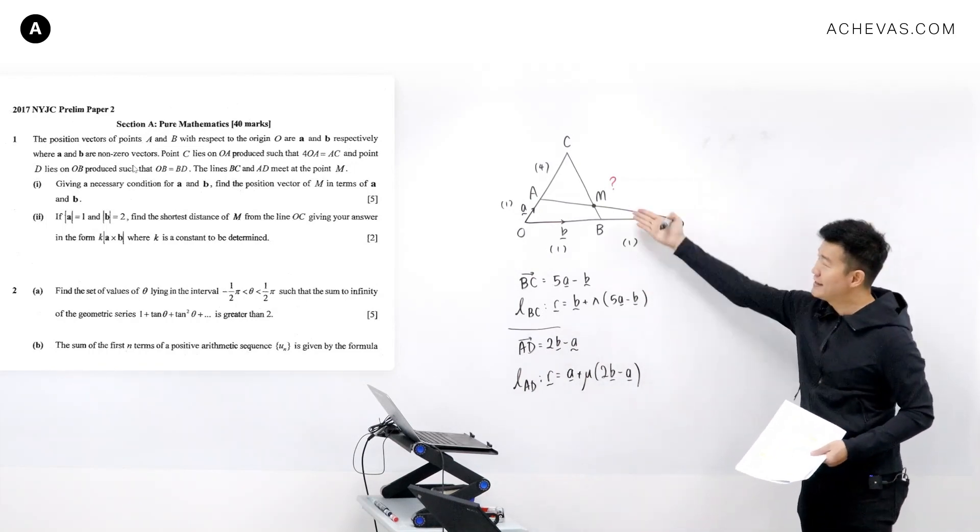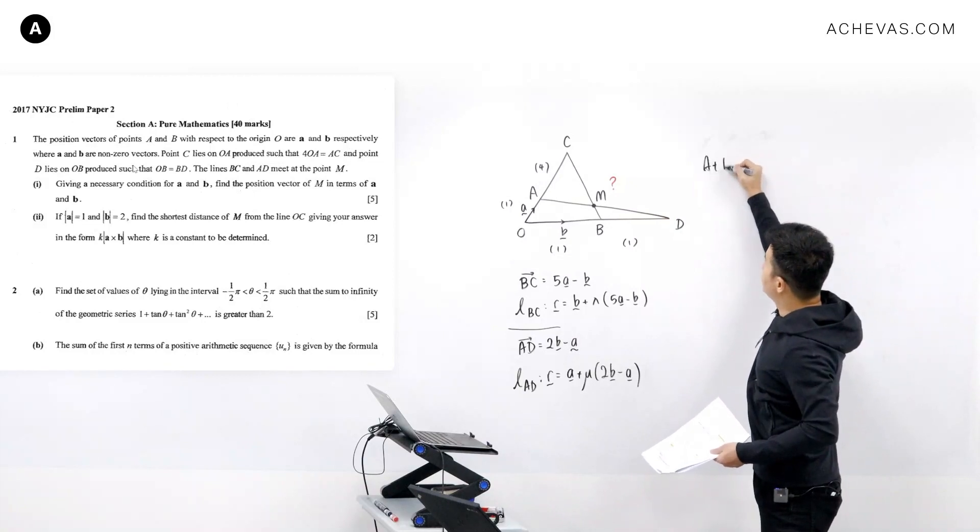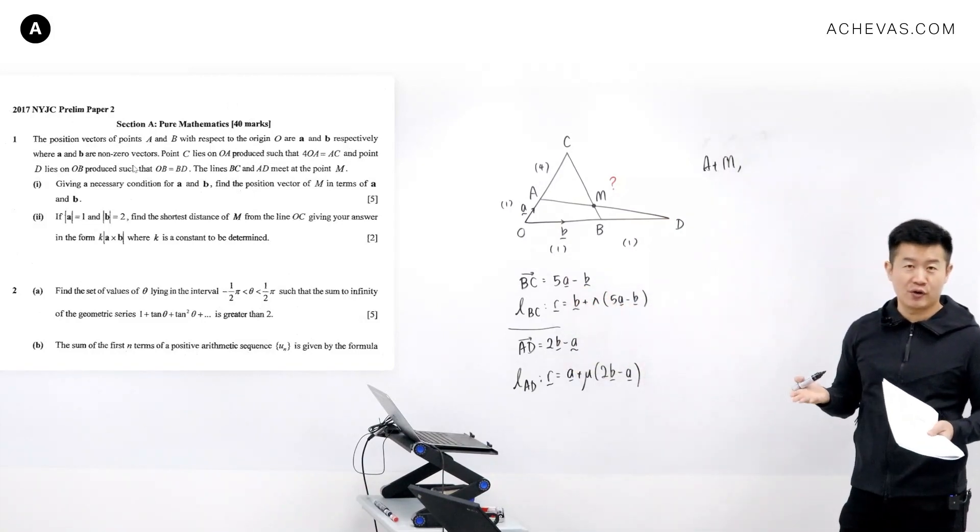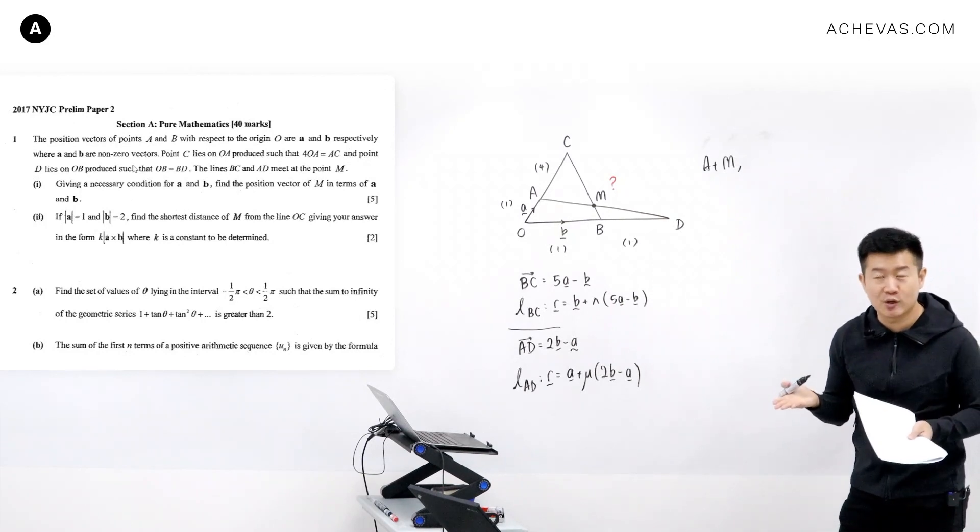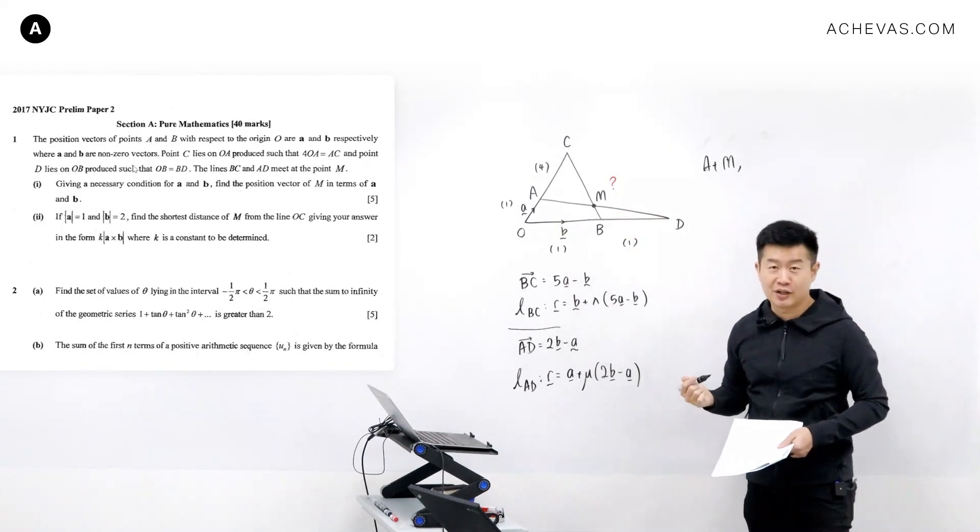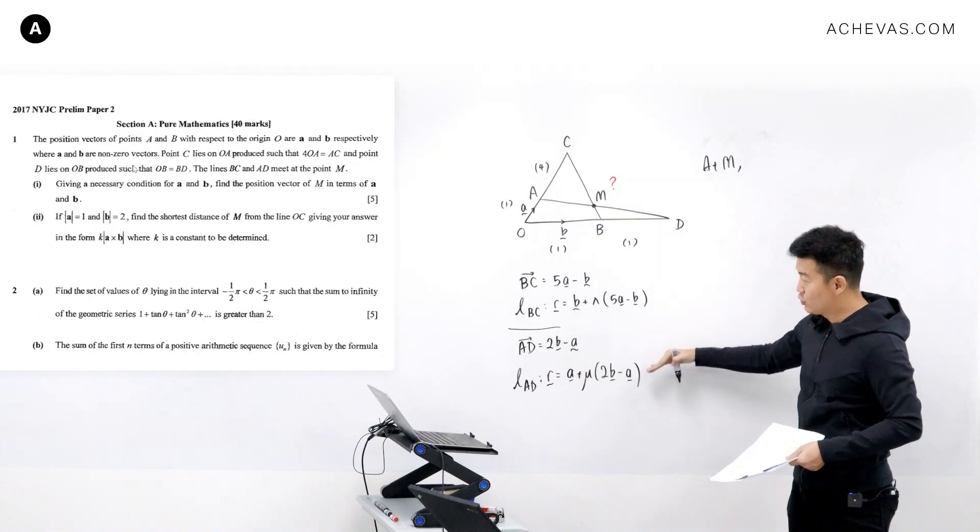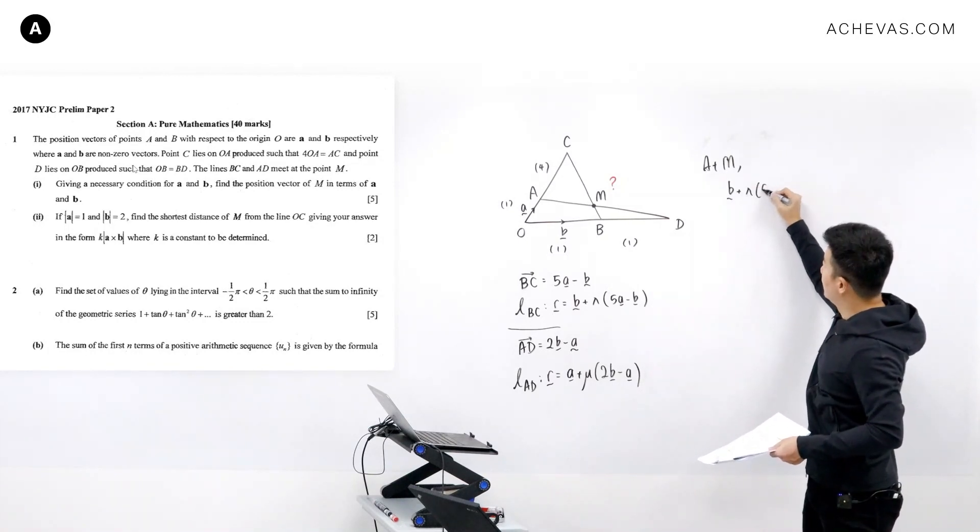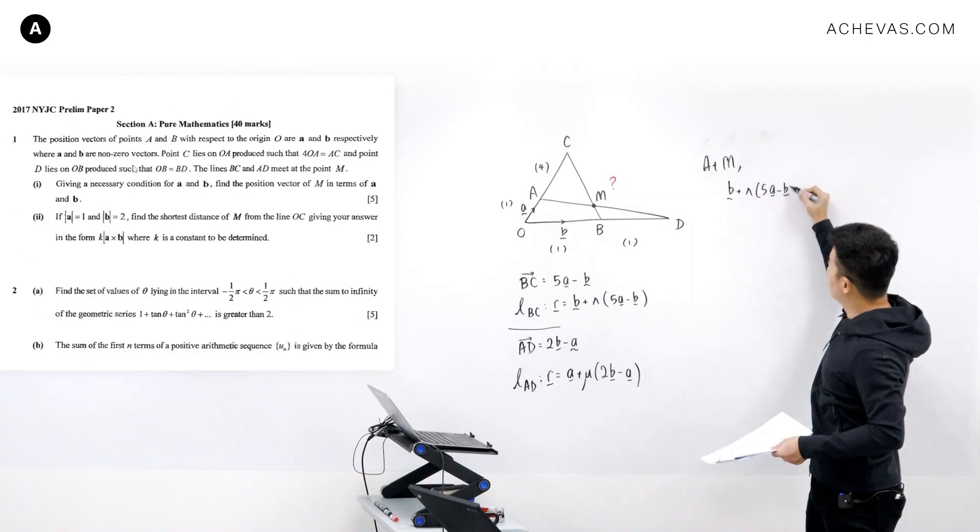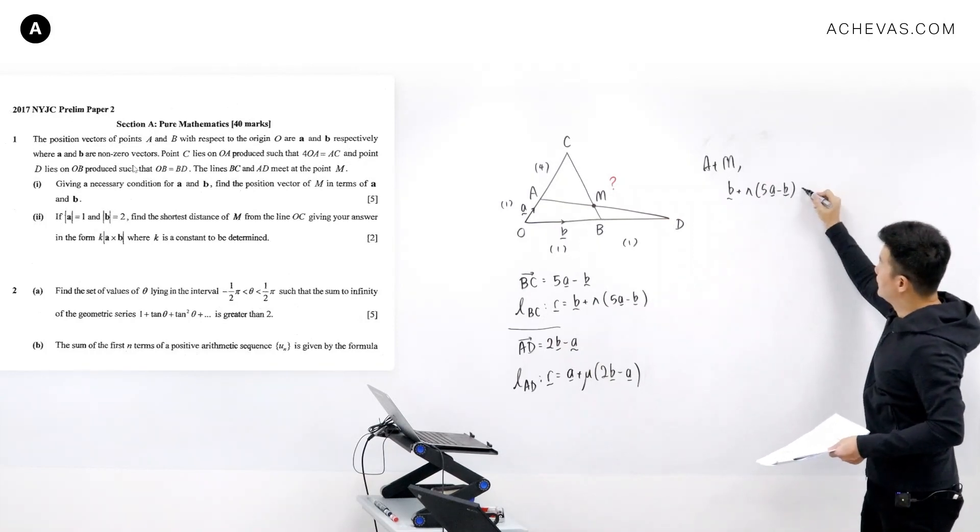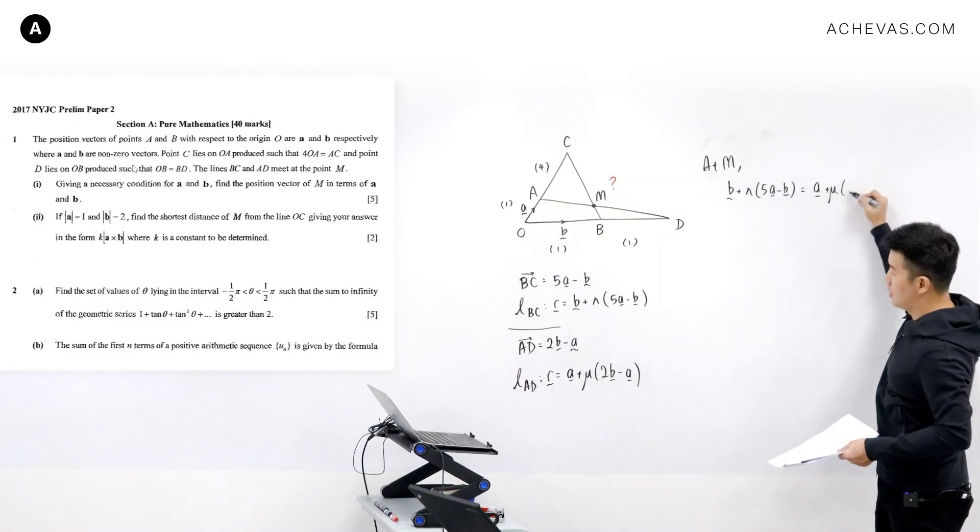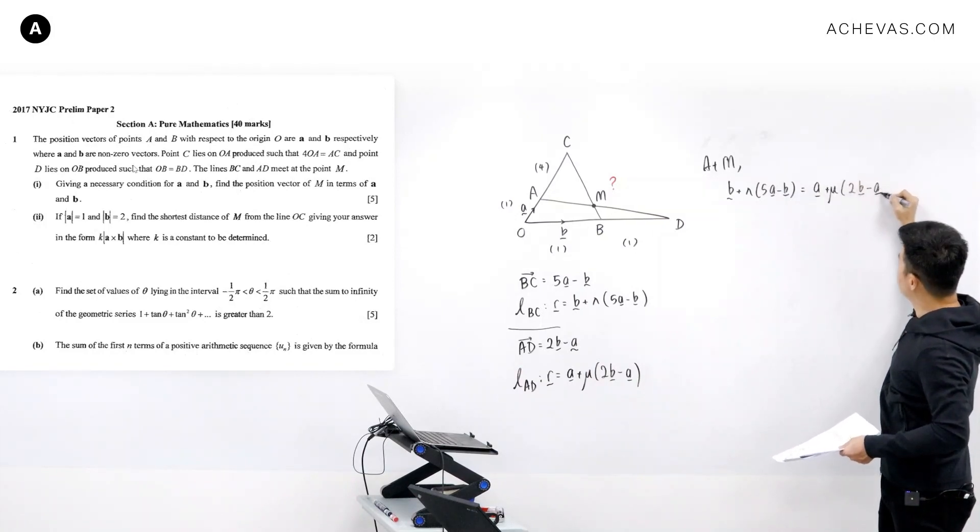And these two lines intersect at m which means that at the point m they are going to be sharing the same r. And now we can solve this as a pair of simultaneous equations to find the position vector of m. So I'm going to match this to this which means that it is going to be b plus lambda of 5a minus b, and this is going to be equal to a plus mu of 2b minus a.